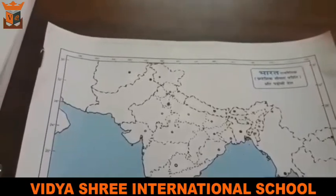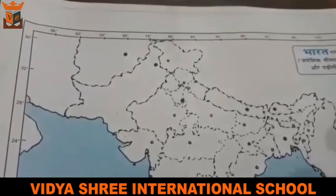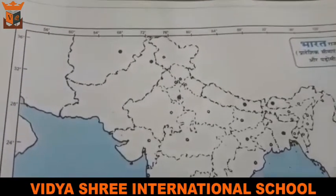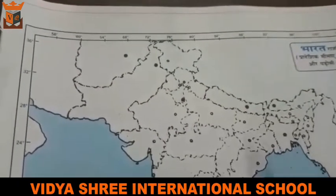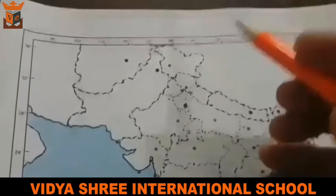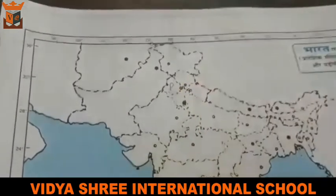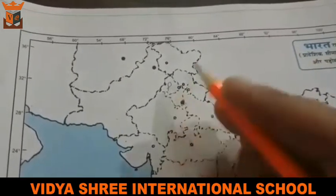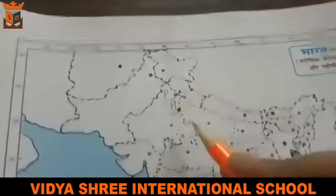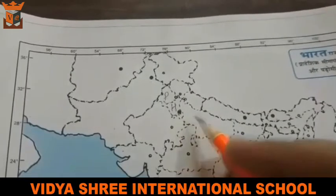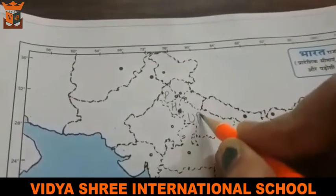As I have explained to you earlier, from our Chapter 3 map work, you should know which states the Northern Plains cover. So first is Punjab — I am writing just the initial. After Punjab, we cover Uttar Pradesh. Uttar Pradesh is also covered by the Northern Plains, so I will write UP.